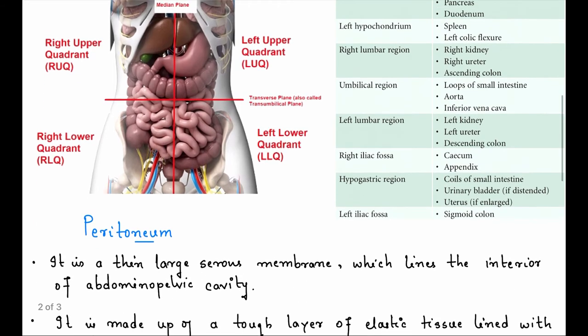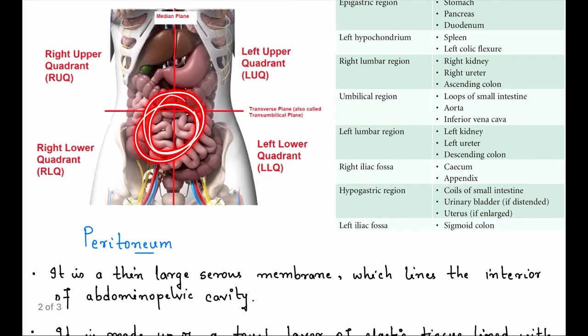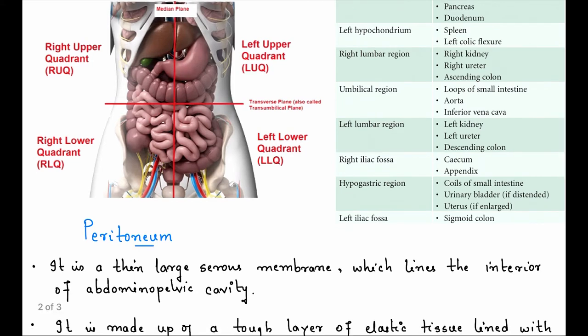Then here is umbilical region. If you can see here, so here is small intestine, here is aorta and the inferior vena cava. Aorta comes and the inferior vena cava is going. Left lumbar - left kidney, left ureter, and the descending colon. Like anatomically, right lumbar - right kidney, right ureter, and the ascending colon.